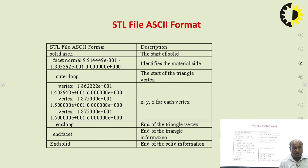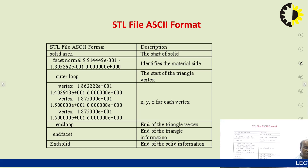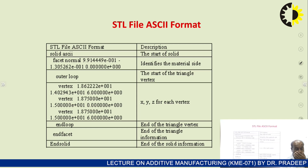Then the outer loop is the start of the triangle vertex definition. The vertex can be defined by different X, Y, Z coordinates. Each triangle has three vertices and the coordinates of each vertex are given. Once one complete triangle is defined, we end the loop — end of the triangle vertex. The first triangle is defined by a facet normal with three coordinates X, Y, Z. Then end loop, end facet, and end solid. This is one complete block of an STL file in ASCII format.